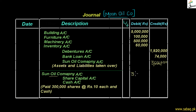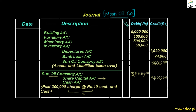Now Moon Oil Company will pay either by issuing shares or by giving cash. We have issued 3 lakh shares at rupees 10 each to the owners of Sun Oil Company. So the share capital is 30 lakh rupees, which will be credited in the share capital account. The remaining amount will be paid in cash by Moon Oil Company. The cash paid is 6,66,000, which will be credited in the cash account.